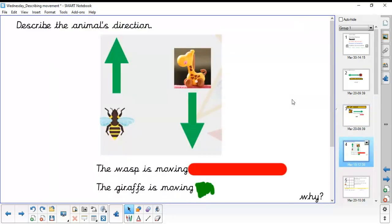This one's a little bit more difficult. It says describe the animal's direction. The wasp is moving in which direction? You can see I don't have the keywords now. Can you remember what they were? The wasp is moving forwards. Look at where the head of the insect is and it's pointing in that direction. So therefore the wasp is moving forwards.